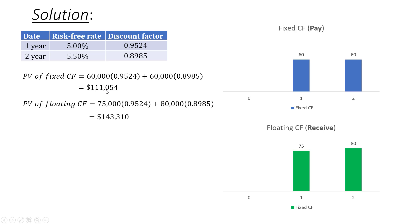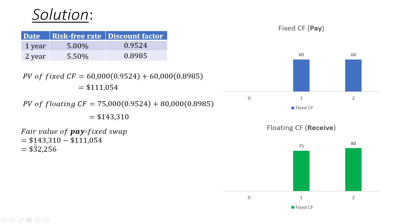Now we need to net off these two values. To determine the sign, we consider what we are paying and what we are receiving. This is a pay fixed interest rate swap, so we are paying the fixed cash flow — that's a cash outflow — and receiving the floating cash flow — that's a cash inflow. Therefore, the fixed cash flow PV is negative and the floating cash flow PV is positive. So we take $143,310 minus $111,054, which comes to approximately $32,000.